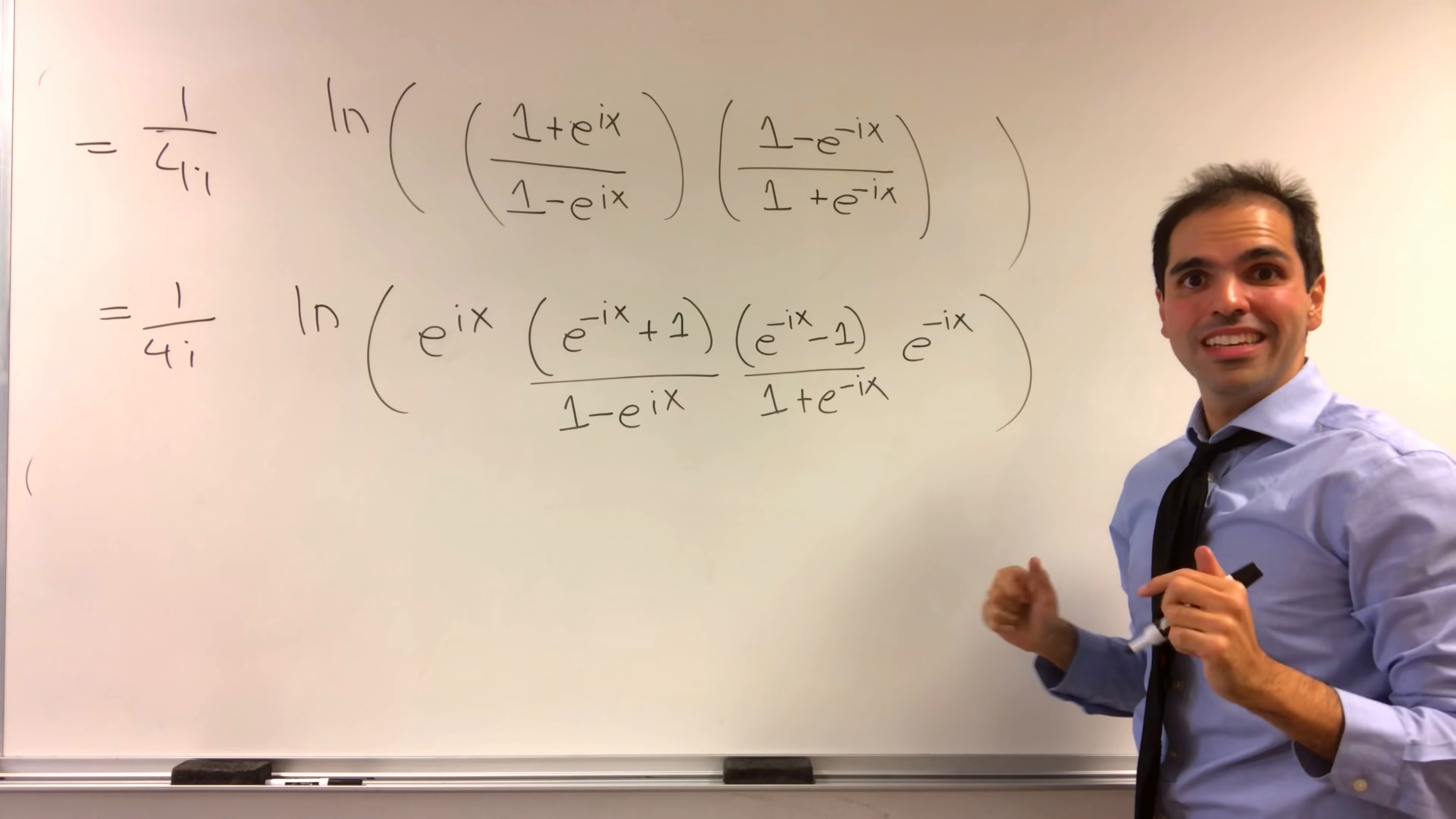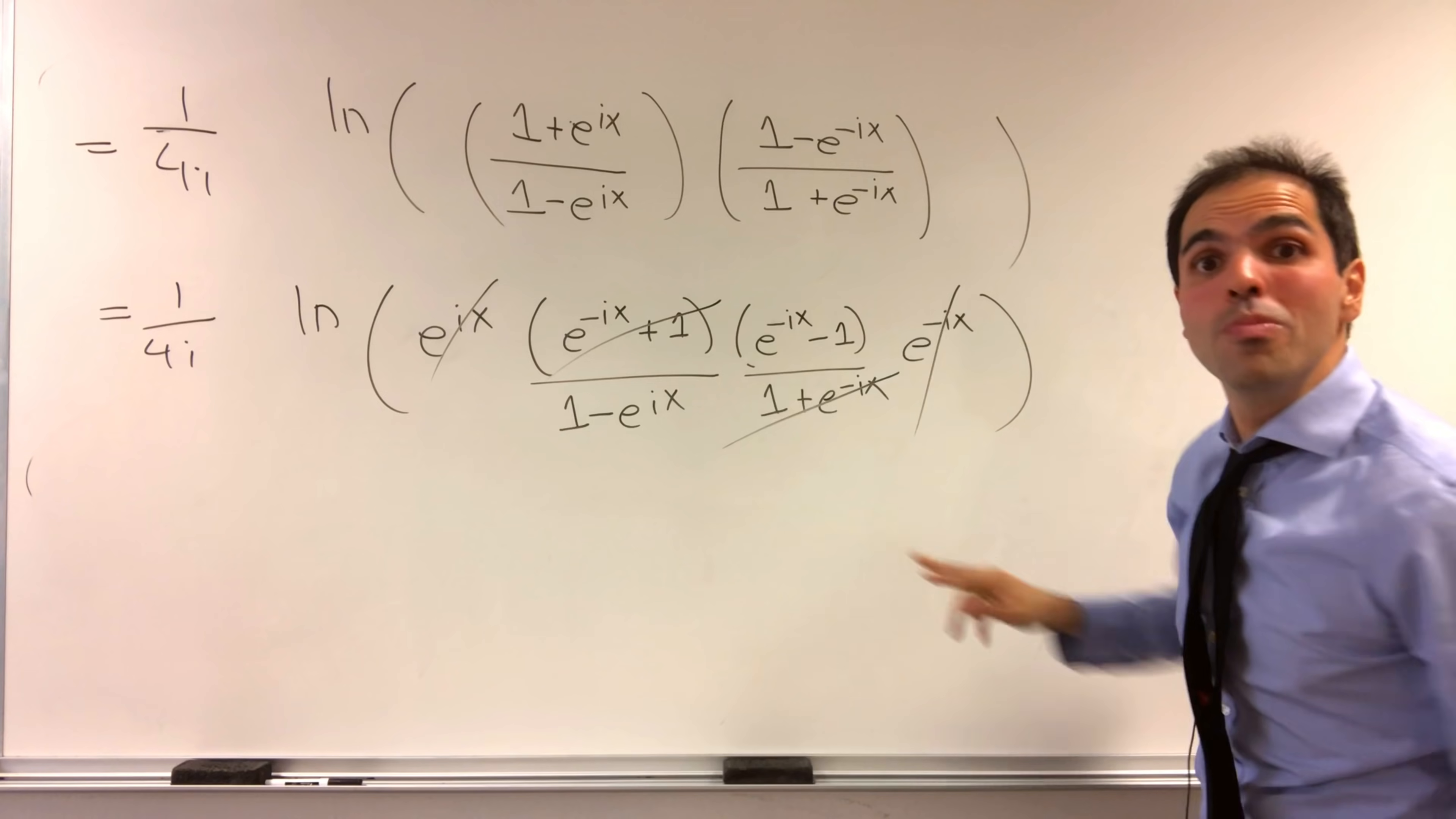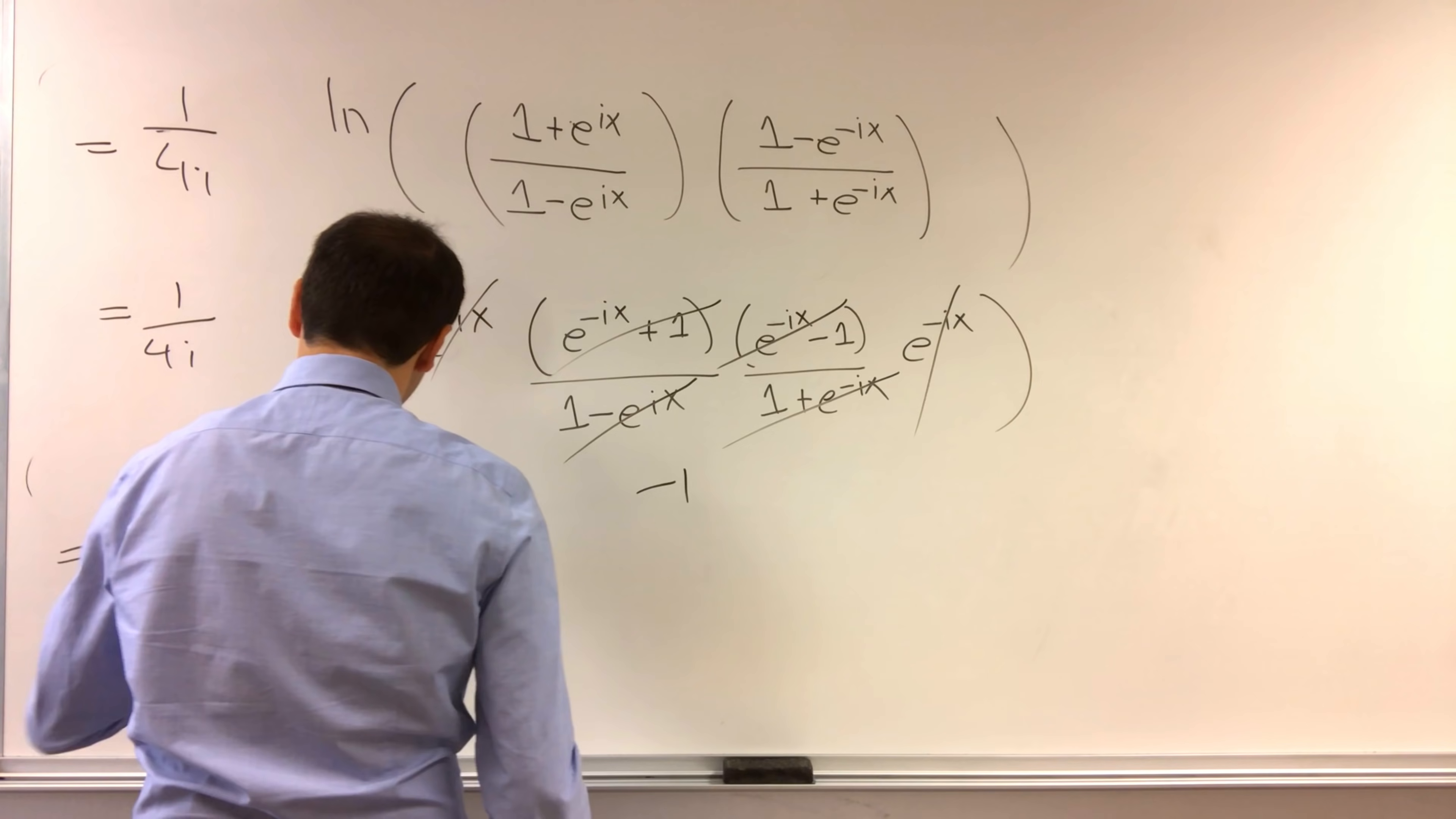And here comes the most exciting part of the video. The e to the ix cancels out. This denominator also cancels out. And even the numerator cancels out except with a minus 1. So in the end, what is the value of the sum? It is 1 over 4i ln of minus 1.